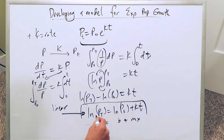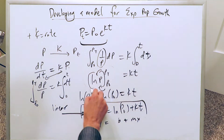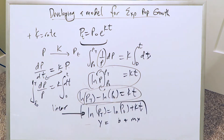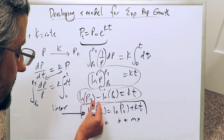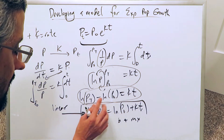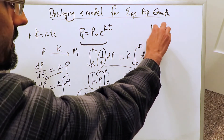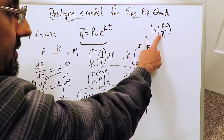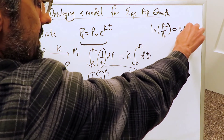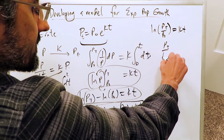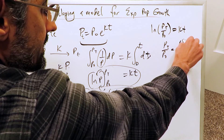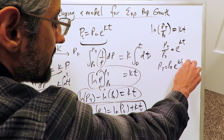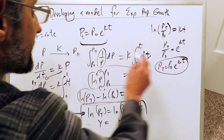Taking the same equation and expressing it in terms of exponentials: the difference of natural logs is equal to the quotient under a single natural log, giving ln(Pt/P₀) = kt. You can then exponentiate both sides to get e^(kt), and move P₀ to the other side. You'll have P(t) = P₀ · e^(kt). The equation has been formed.